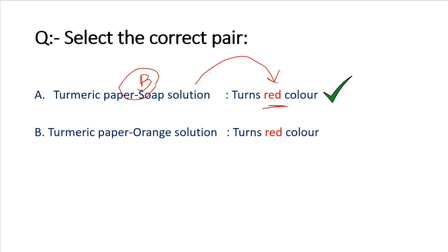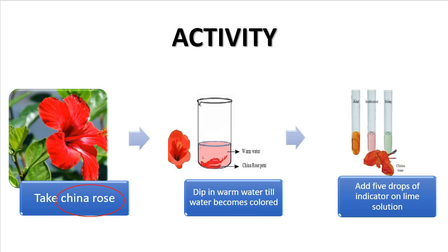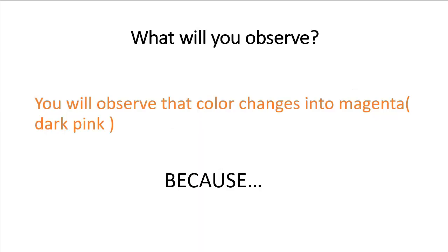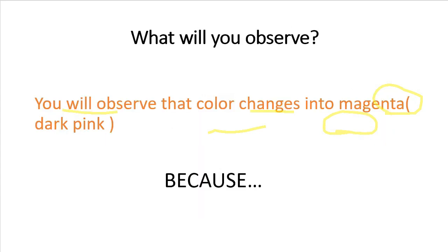Now let us move to our last natural indicator — china rose. First, take china rose petals and dip them in warm water until the water becomes colored, turning light pink. Then take lime solution in a tube and drop four or five drops of this indicator into it. You will observe that the color changes to dark pink. This is because china rose indicator turns acidic solutions to dark pink.